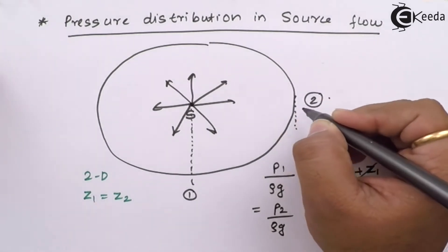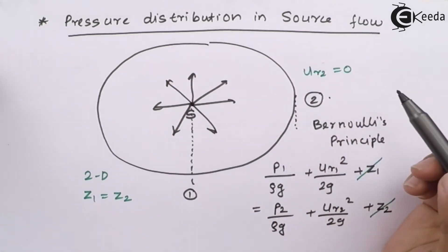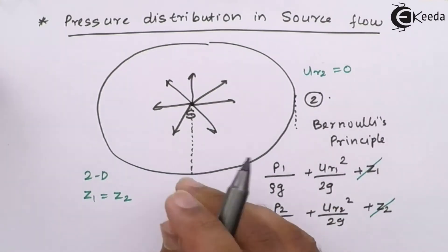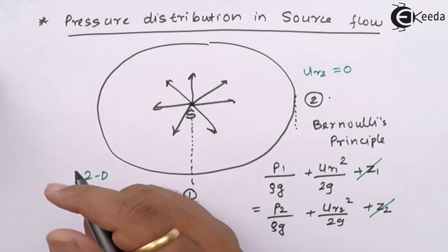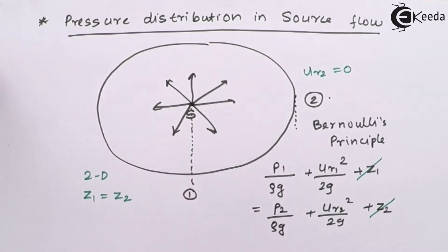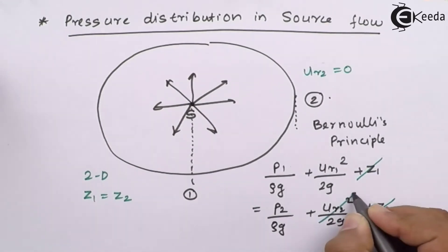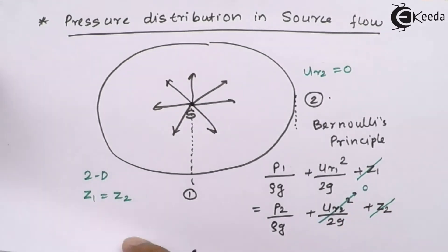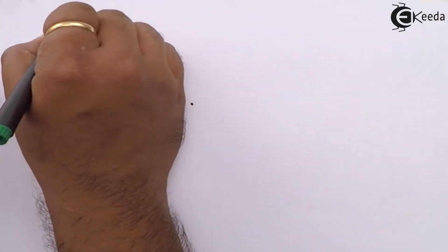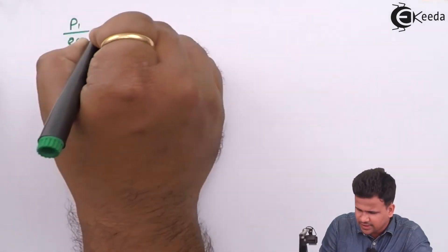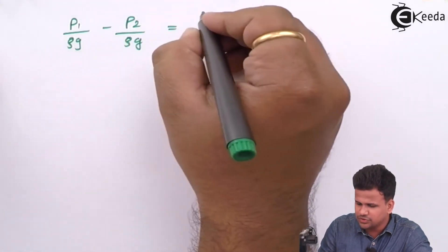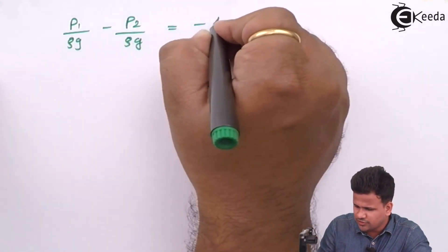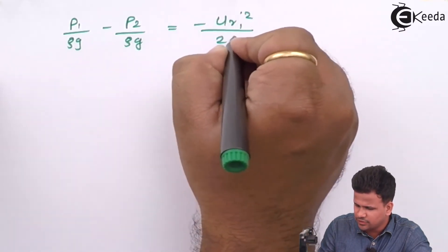At this point over here, ur2 will be zero, and as it goes away from the center, the velocity is going to reduce. Let us write down this part. This part is going to be zero. So what we get is p1/(ρg) - p2/(ρg) = -ur1²/(2g).